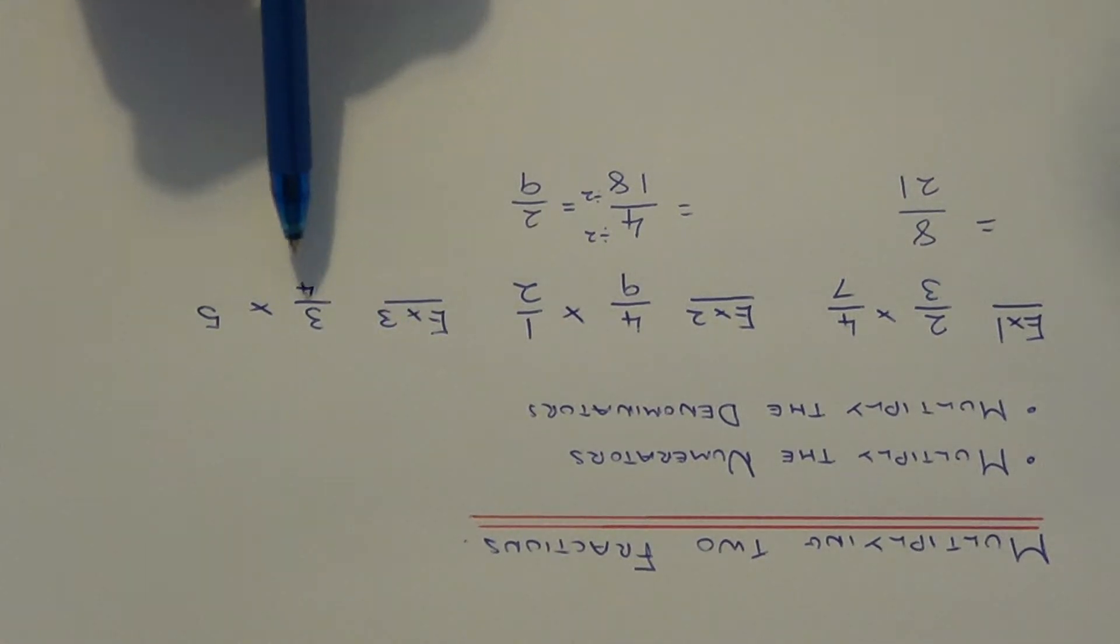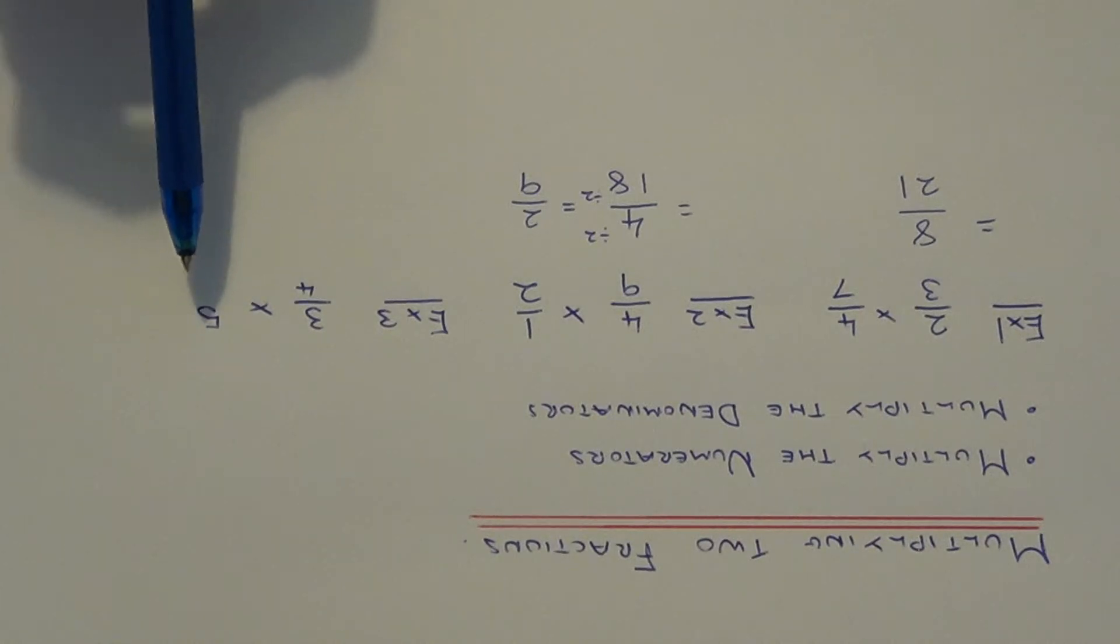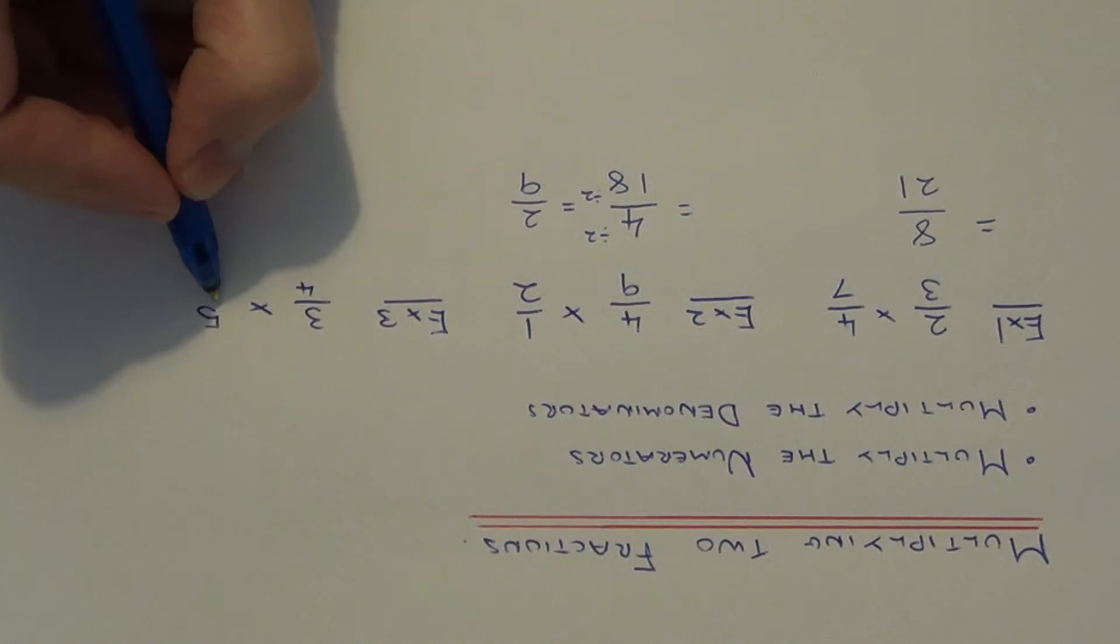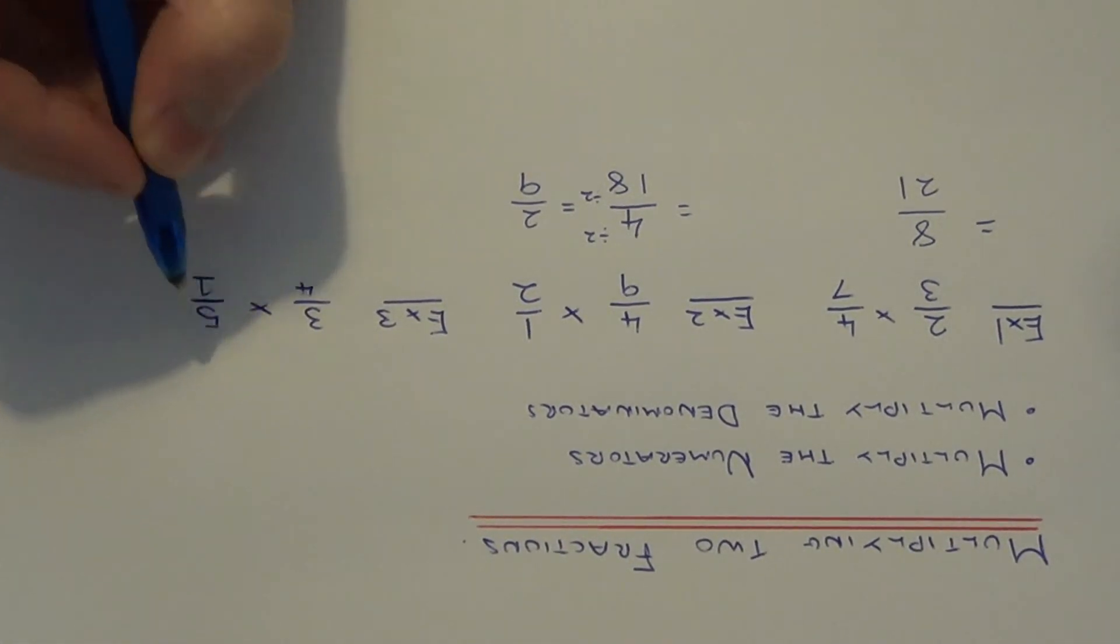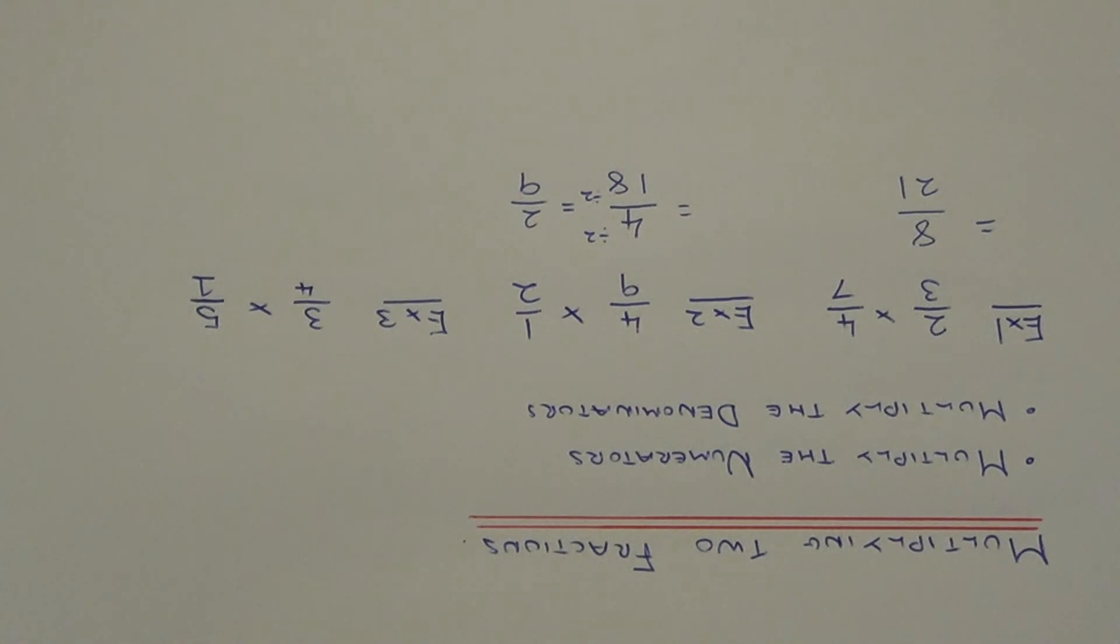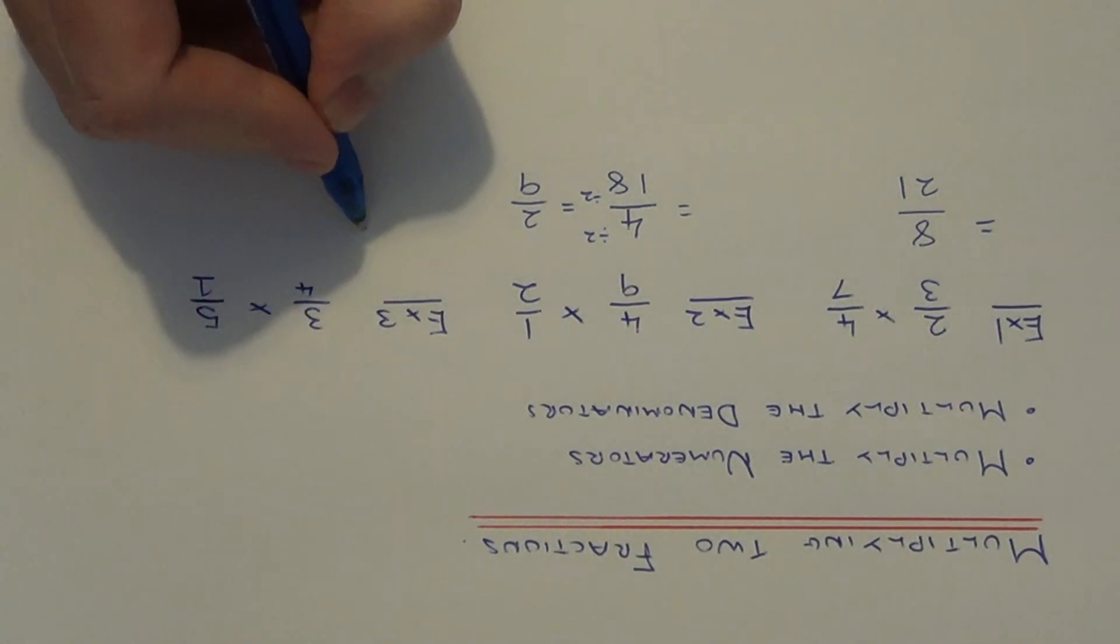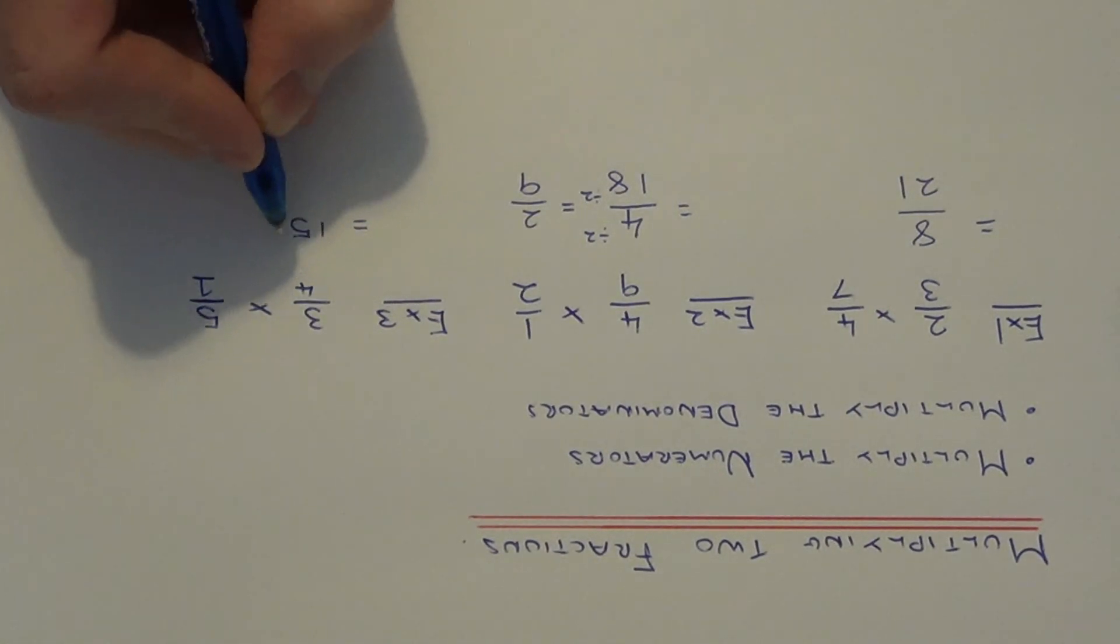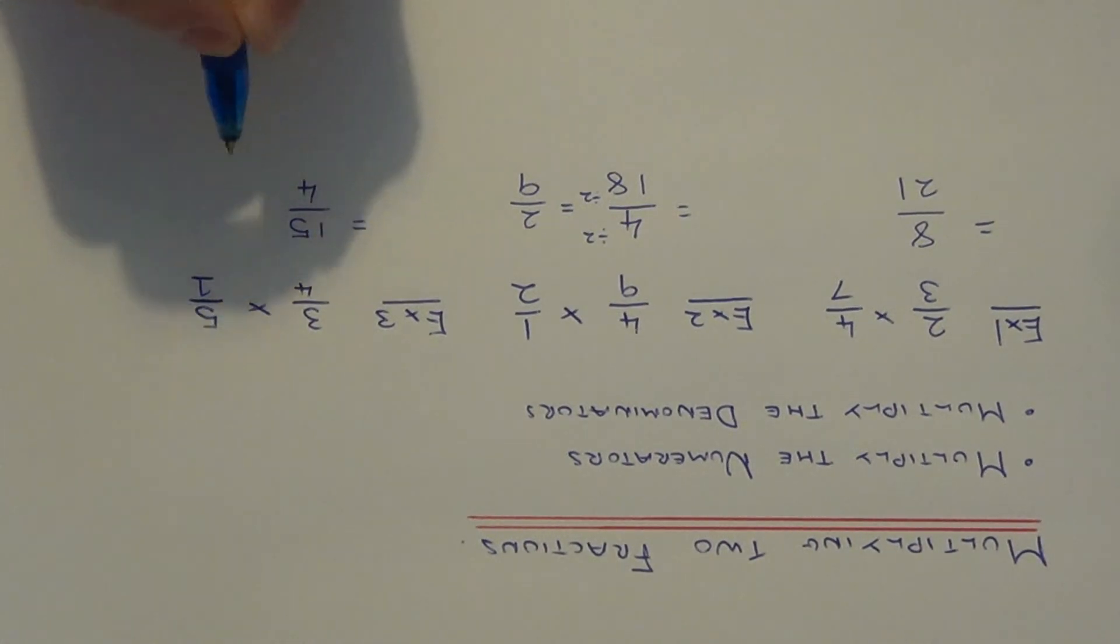Example three is a little bit different because this time we're multiplying a fraction by a whole number. But we can change this to a fraction. Just write it as 5 over 1 because 5 is the same as 5 whole ones. If we multiply the numerators together, 3 times 5 is 15. 4 times 1 is 4. So we get the improper fraction 15 quarters.